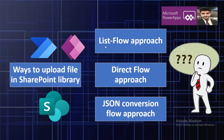The second method is the Direct Flow approach, where you are simply sending that file to your document library without doing any type of modification in the documents. The third one is the JSON Conversion Flow approach, where you are doing some manipulation on the second approach so that it can work very well. The second approach also works but has some constraints, which is why the third approach comes into the picture.